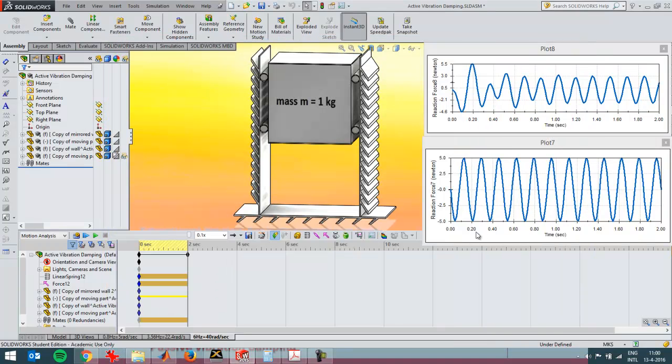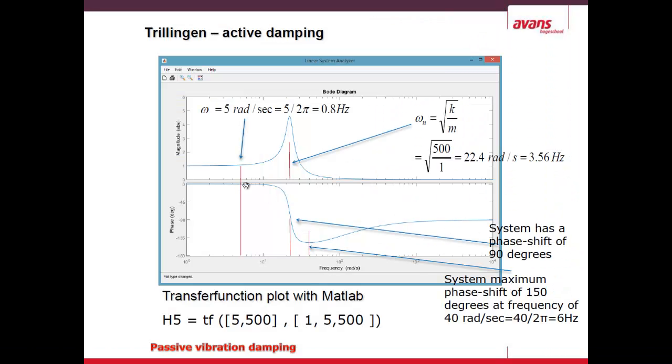I can see that in this phase diagram over here. On the top graph we have the absolute value of the output divided by the input. On the lower graph we have the phase shift, which you can also analyze with SOLIDWORKS Motion. That was what I wanted to tell about active vibration damping. Thanks for watching.